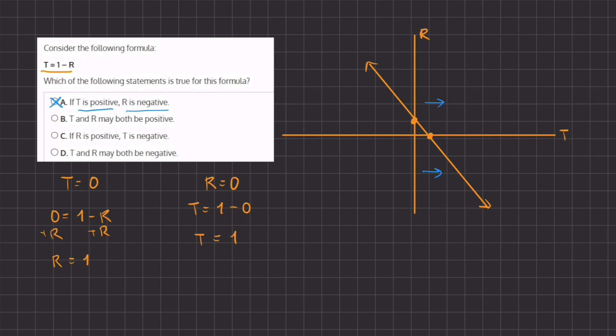Now let's read through answer B. t and r may both be positive. We just said that t is going to be positive on the right-hand side, and r is going to be positive upwards from this side of the axis. So, if we move upwards, where they both cross, is going to be right over here. So, this is the only area where r and t may be positive, and therefore, b is the correct answer.